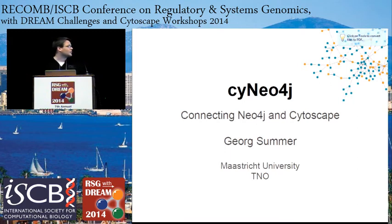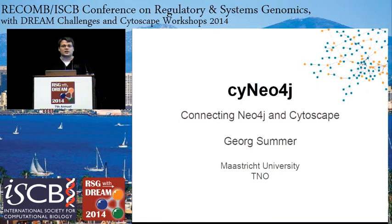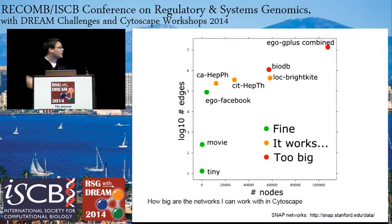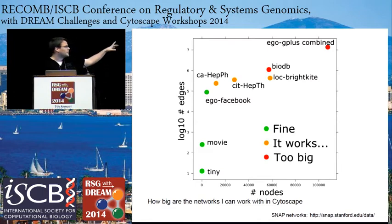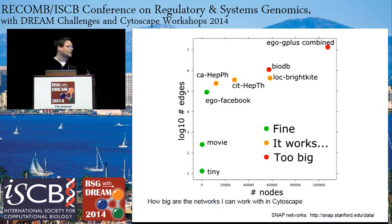I'm going to start off this session with an app that connects infrastructure and Cytoscape. Why did I start work on this app? There are certain limitations if you work as a normal user on your desktop machine with Cytoscape. Keep in mind that the y-axis, the number of edges, is in log 10. I'm talking about relatively large networks, most of which are derived from the SNAP network collection as examples.